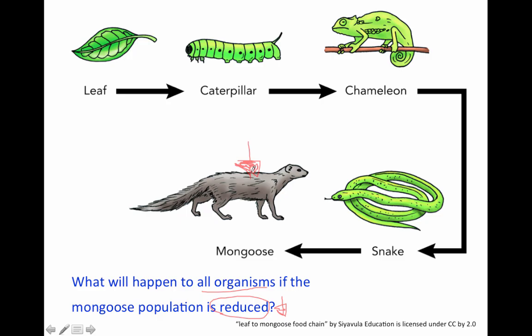So if the mongoose population decreases, then its prey won't have anything to keep its numbers down. So the snake population is going to end up increasing because there are less predators. That would cause the chameleon population to decrease because all of a sudden there are more snakes to eat the chameleons. But now that there are less chameleons, its prey, the caterpillar, are going to increase, which will then cause the leaf population to decrease because there are a lot more caterpillars eating those leaves. Go ahead and erase your page protectors at this time.